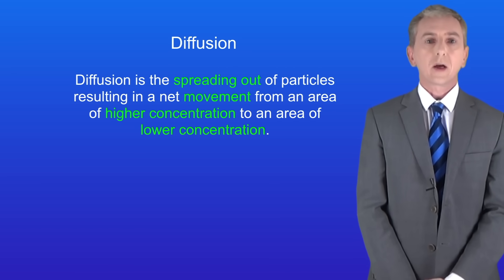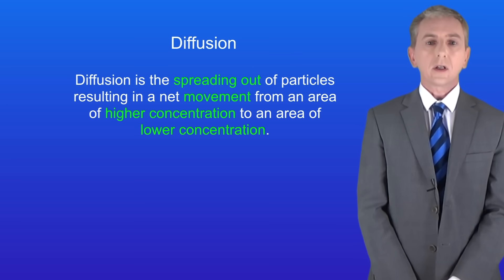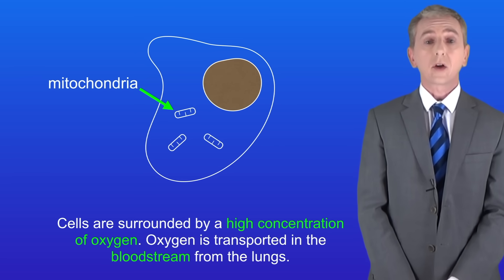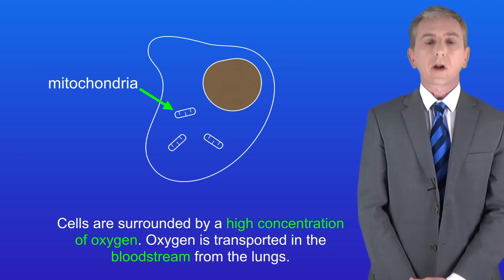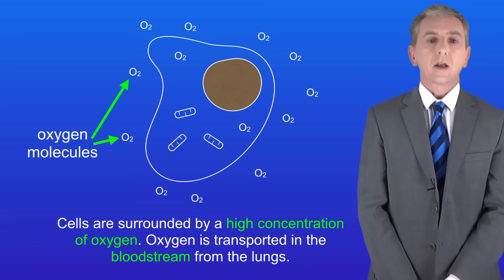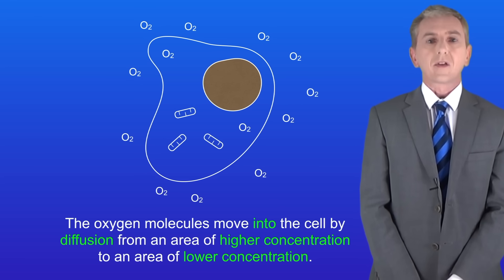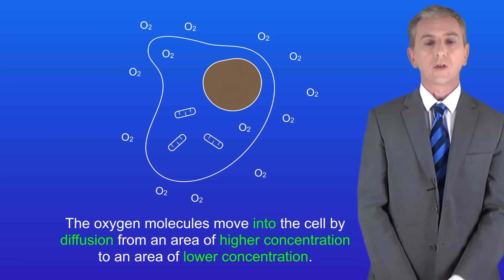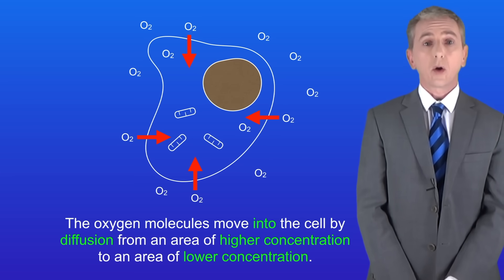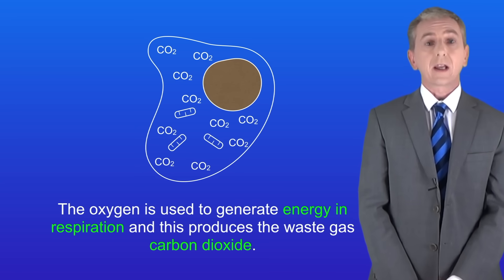We're going to look at three molecules which move in and out of cells by diffusion. These are oxygen, carbon dioxide, and urea, and it's really important that you learn these examples. Cells need oxygen for respiration and that's carried out by mitochondria. Cells are surrounded by a high concentration of oxygen because oxygen is transported in the bloodstream from the lungs. There is a higher concentration of oxygen outside the cell and a lower concentration inside the cell, so the oxygen molecules move into the cell by diffusion, moving from an area of higher concentration to an area of lower concentration. The oxygen is used to generate energy in respiration, and this produces the waste gas carbon dioxide.